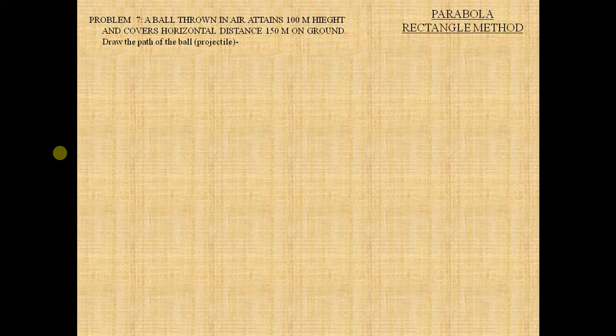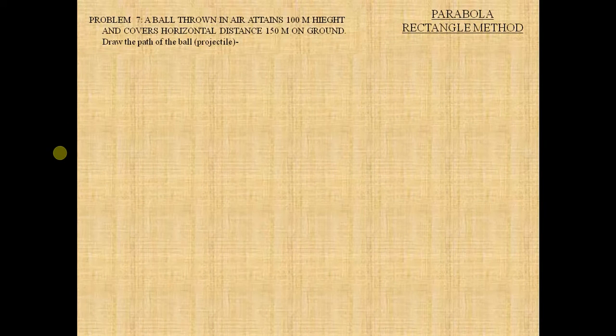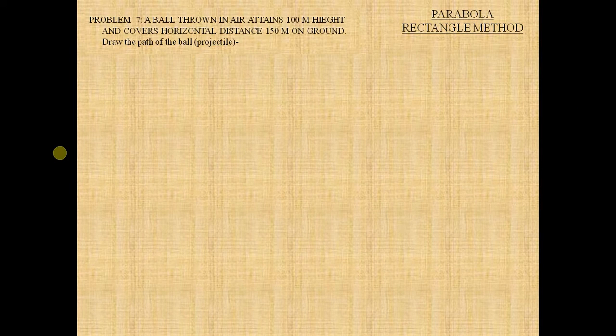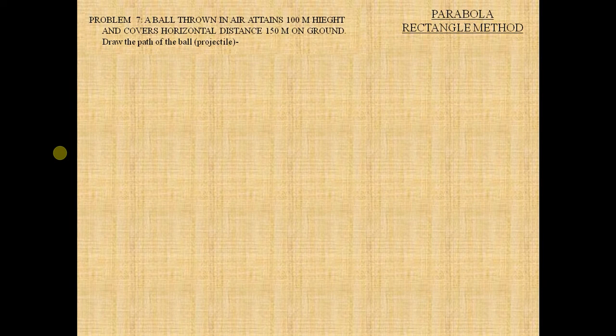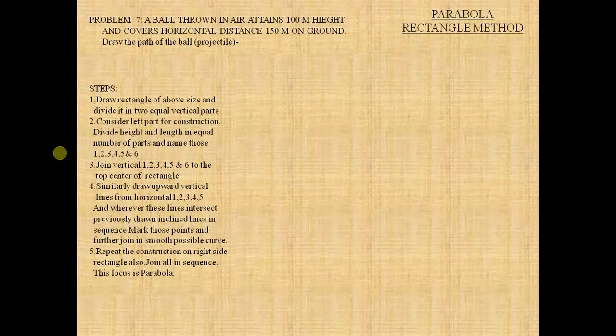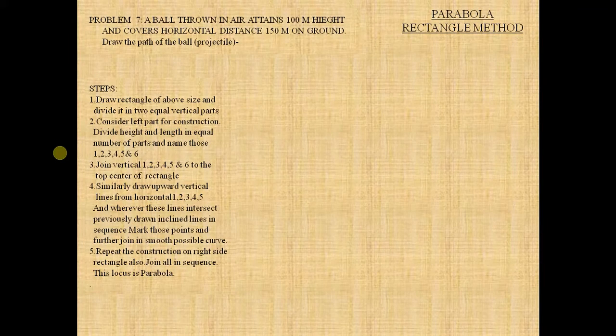First, we must understand the problem perfectly. A ball is thrown to a height of 100 meters, that means the length is 100 meters and the base is 150 meters on the ground. Now, first read the steps involved in drawing the parabola using the rectangle method.